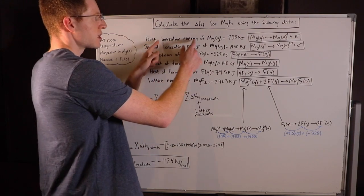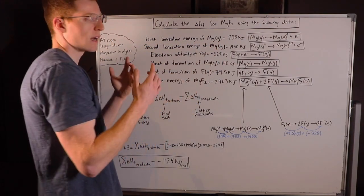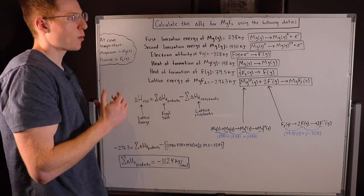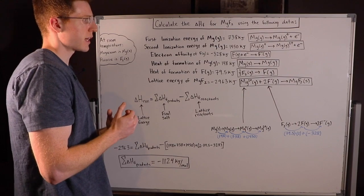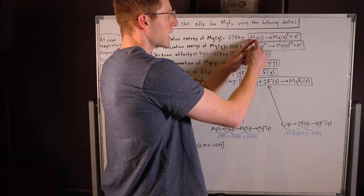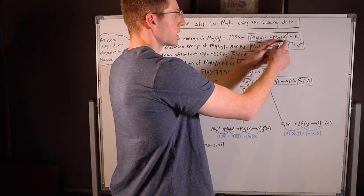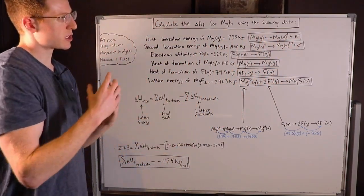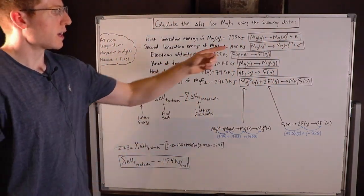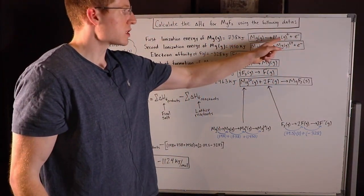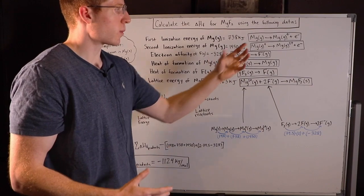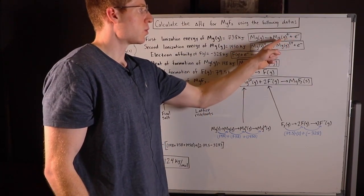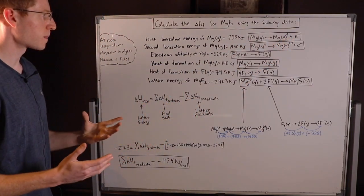The first ionization energy of magnesium gas — ionization energy is taking away the first electron. So magnesium gas goes to magnesium gas plus, plus that first electron that we stole. This is plus because an electron has a minus one charge; when we remove that minus one charge, you're left with a plus one charge.